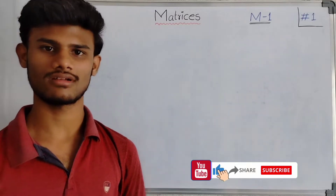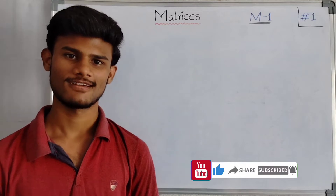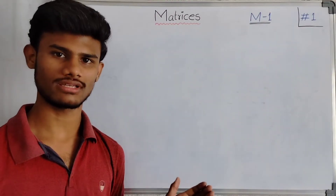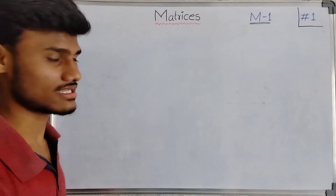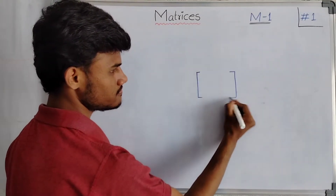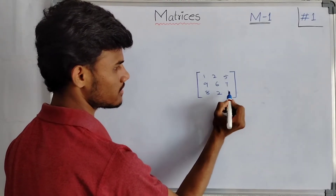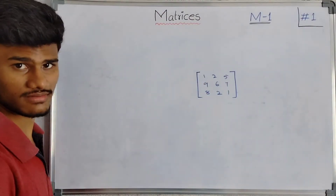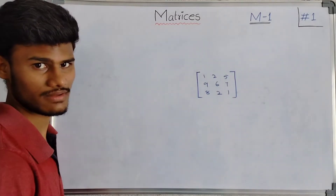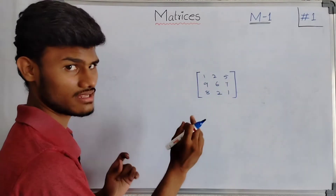First of all, coming to matrices — what is the definition of a matrix? A matrix is nothing but the systematic arrangement of elements in M rows and N columns. For example, elements like 1, 2, 5, 9, 6, 7, 8, 2, 1 are systematically arranged between brackets. This is called a matrix.